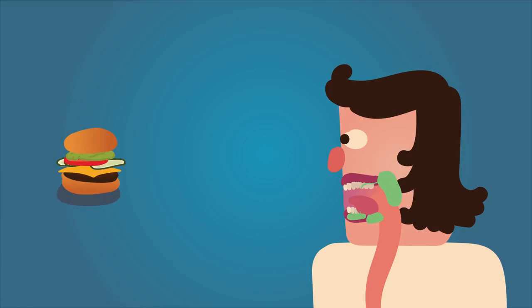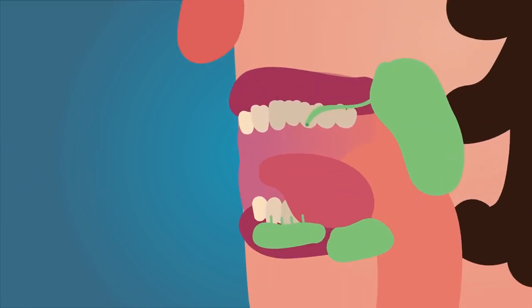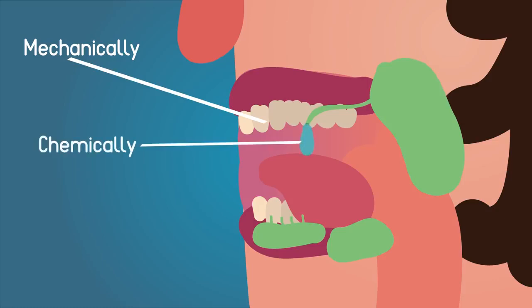When I put this burger in my mouth, I do both types of digestion. My mouth breaks it down mechanically using my teeth, which mashes up the food into smaller pieces. My saliva carries out chemical digestion. It contains an enzyme called amylase that takes the big starch molecules you find in the bun and breaks them into smaller pieces called maltose.